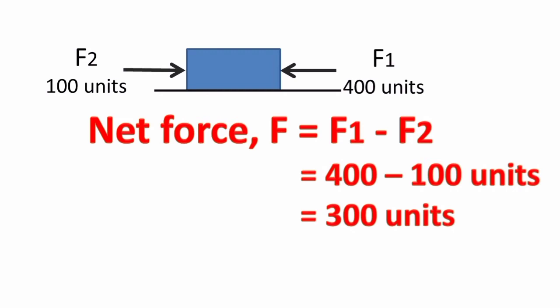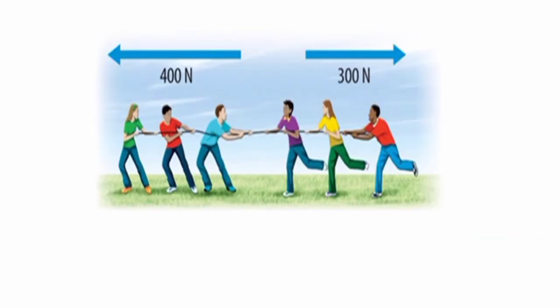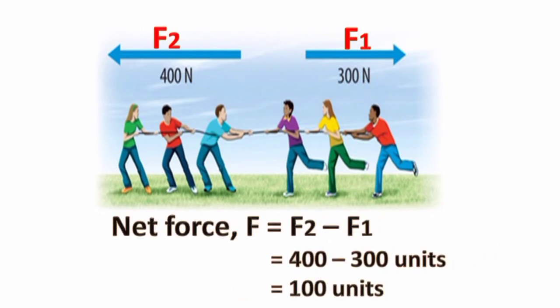Here also, in this case on the rope, the two teams are exerting opposite forces. Here F2 is greater than F1, so the net force will be F2 - F1, and here also the object moves towards left as F2 is the greater force.